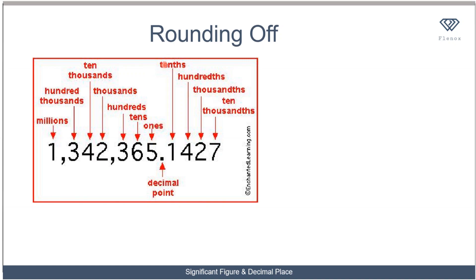Now let's quickly talk about place value. You should know place value from primary school, but as a quick recap: if you have a number like 1,204,356.172, the 5 is in the ones place - also referred to as units. The 6 is tens, then hundreds, thousands, ten-thousands, hundred-thousands, and millions.